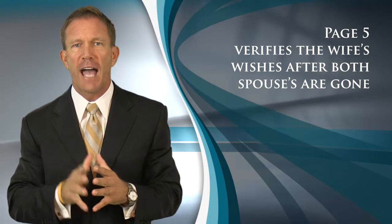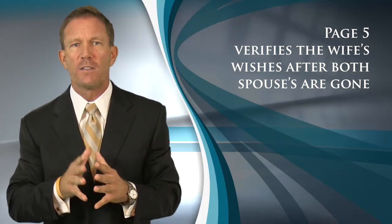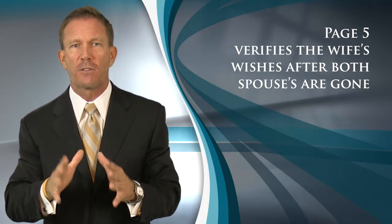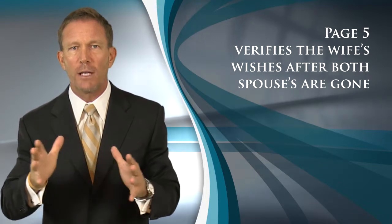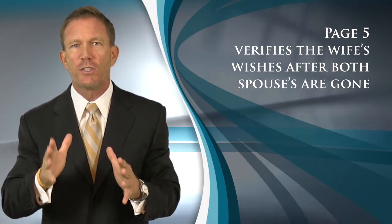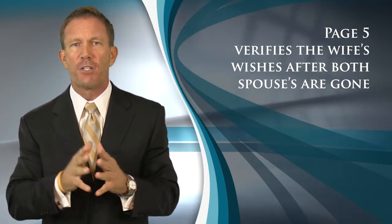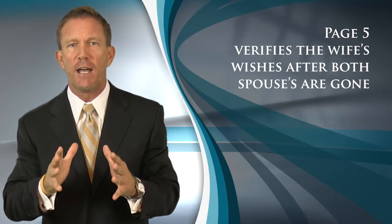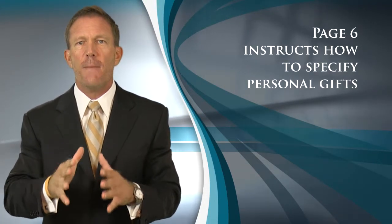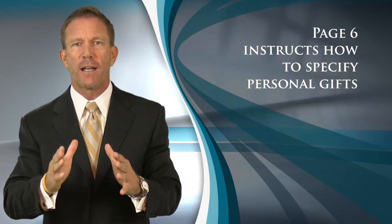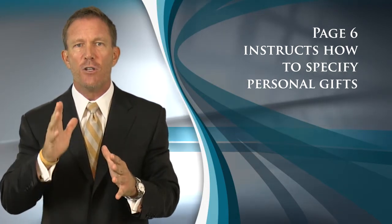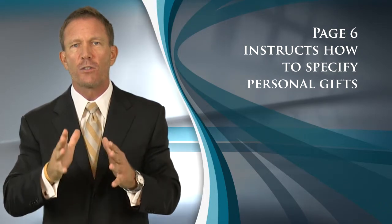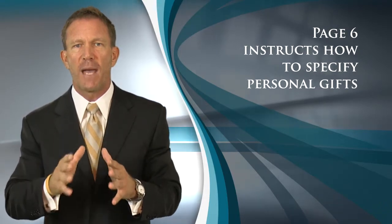Page five verifies how the wife wants the estate divided after both spouses are deceased, which also is generally equally among the children. It too sets forth the minimum age a beneficiary must attain before being allowed to manage their own inheritance. Finally, many of you are interested in specifying distributions of certain personal effects, and you will find instructions for doing so at the top of page six.